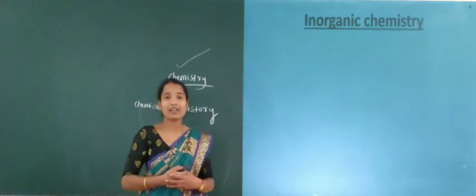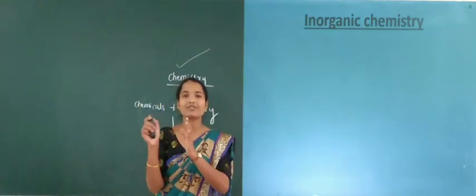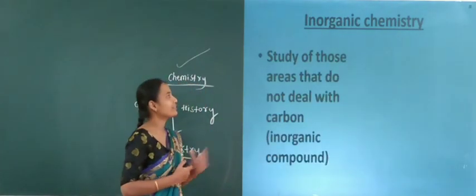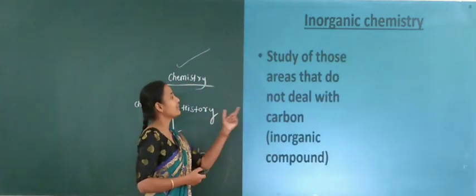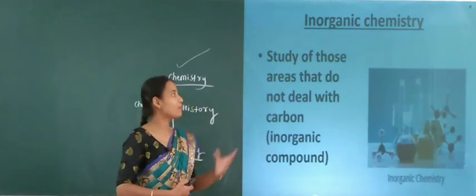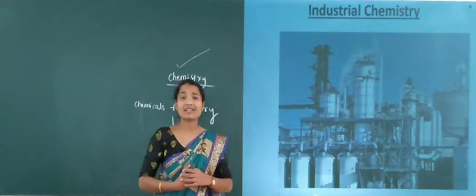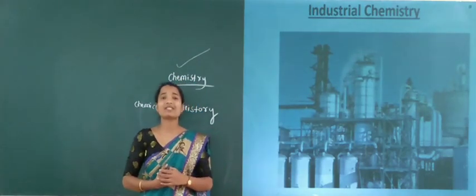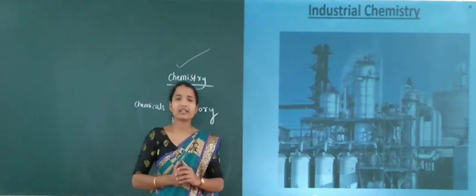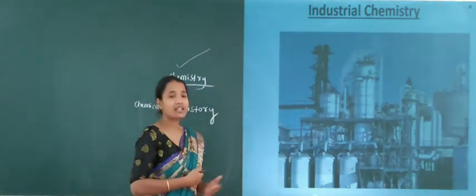Next is inorganic chemistry. Inorganic chemistry is just the reverse form of organic chemistry — the study of those areas that do not deal with carbon, that is inorganic compounds. And next is industrial chemistry, which deals with the study of industry-related chemistry.